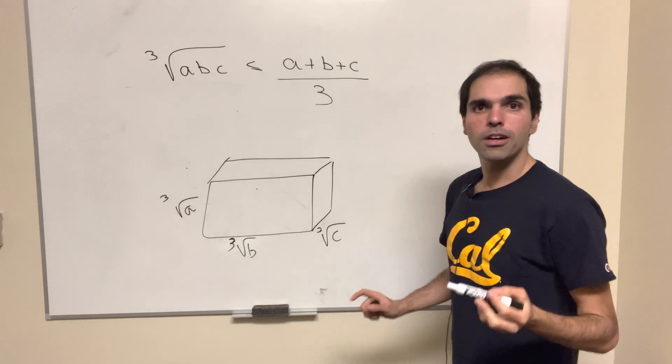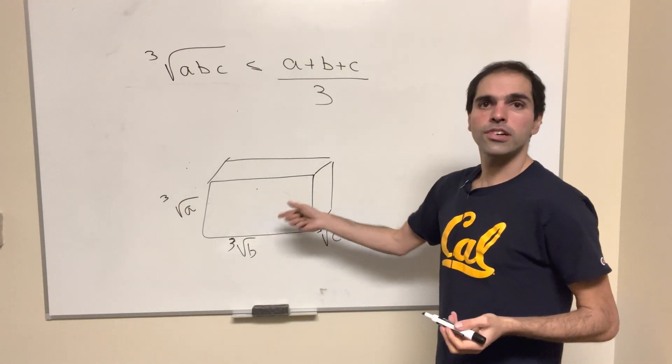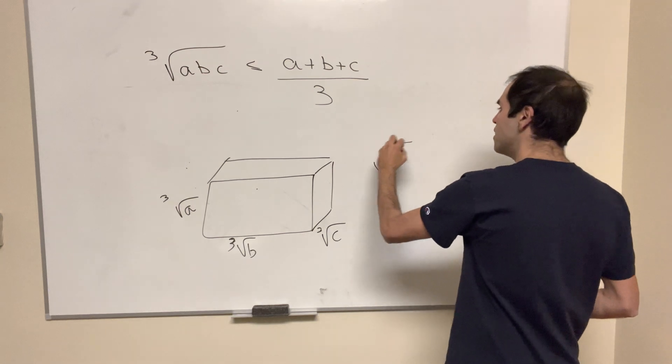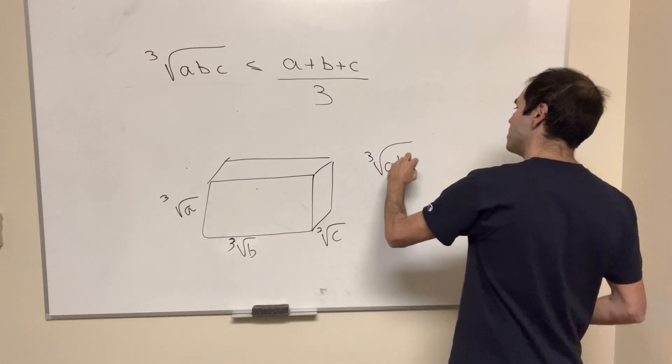I was thinking a little bit about the analog, because here the volume of this prism is indeed cube root of a times b times c.